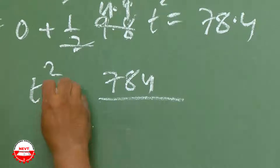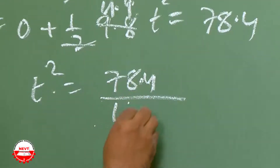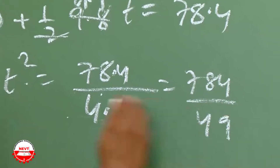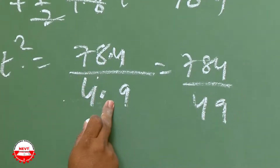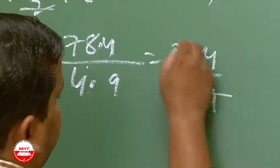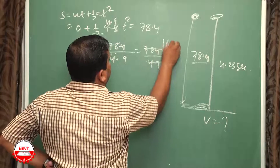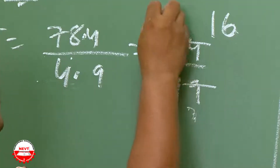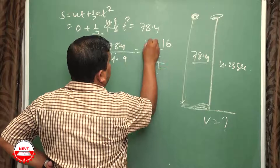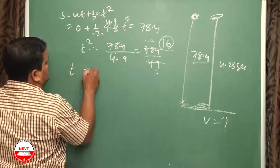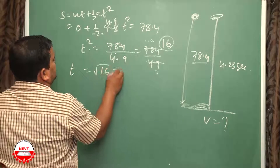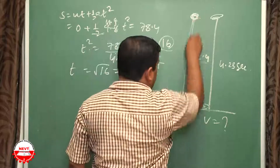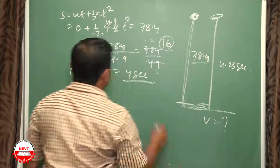t² = 78.4 / 4.9 = 784 / 49. Simplifying by dividing by 7 gives 112/7 = 16. Therefore t = √16 = 4 seconds. So the time taken by the helmet to strike the ground is 4 seconds.